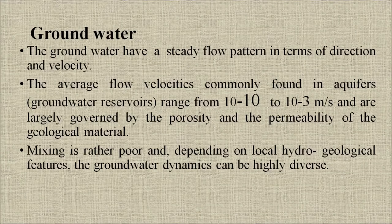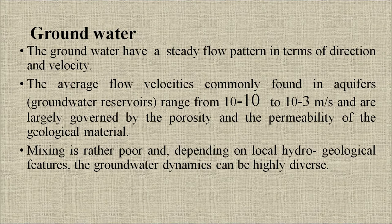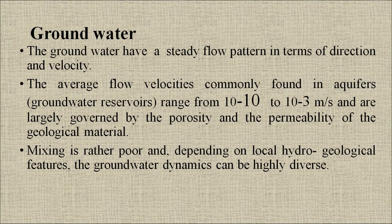Groundwater has a steady flow pattern in terms of direction and velocity. The average flow velocity commonly found in aquifers ranges from 10⁻¹⁰ to 10⁻³ meter per second and is largely governed by the porosity and permeability of the geological material. Mixing is rather poor and, depending on local hydrogeological features, the groundwater dynamics can be highly diverse.